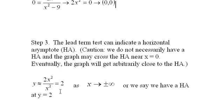And y is approximately 2x squared over x squared, which equals 2 as x goes to plus and minus infinity. Or we say we have a horizontal asymptote at y equals 2. This function is going to behave like y equals 2 as x gets big in the positive or negative direction.